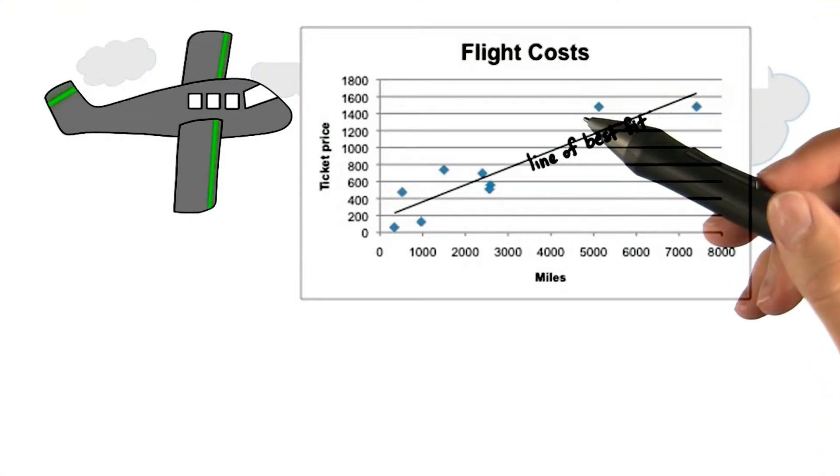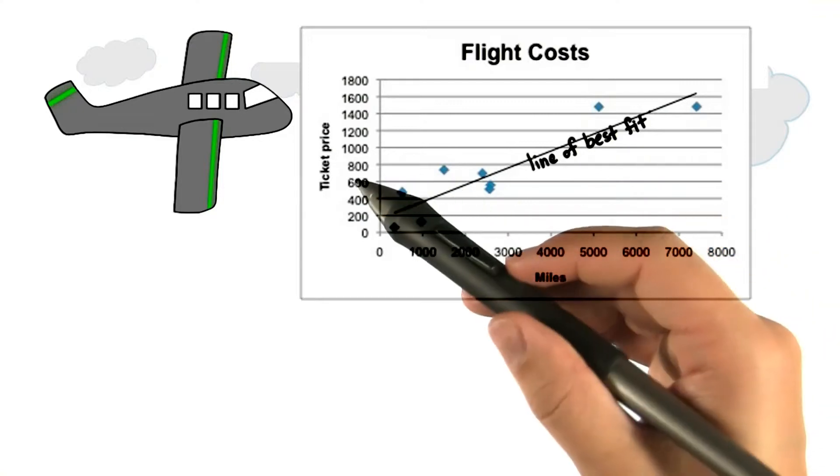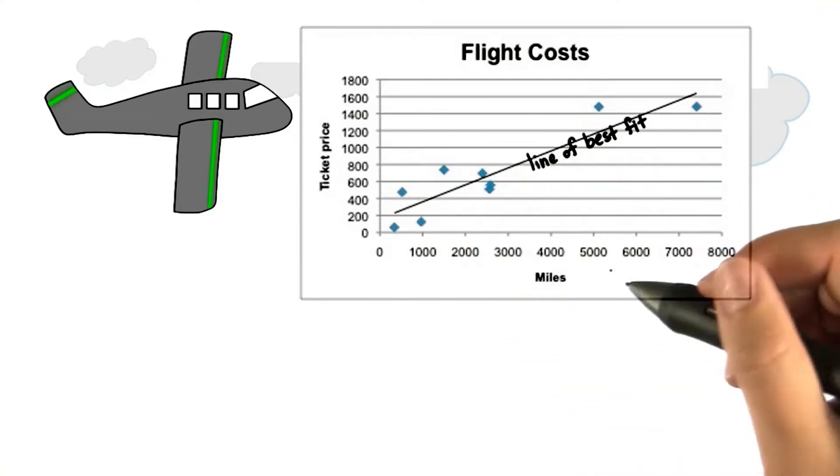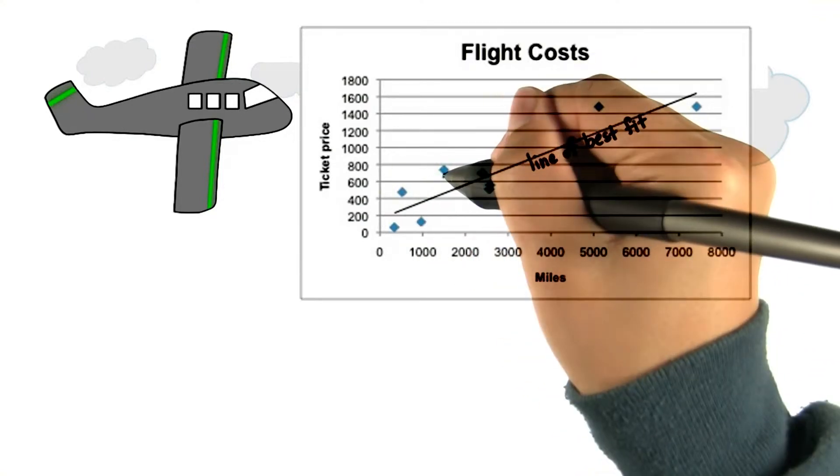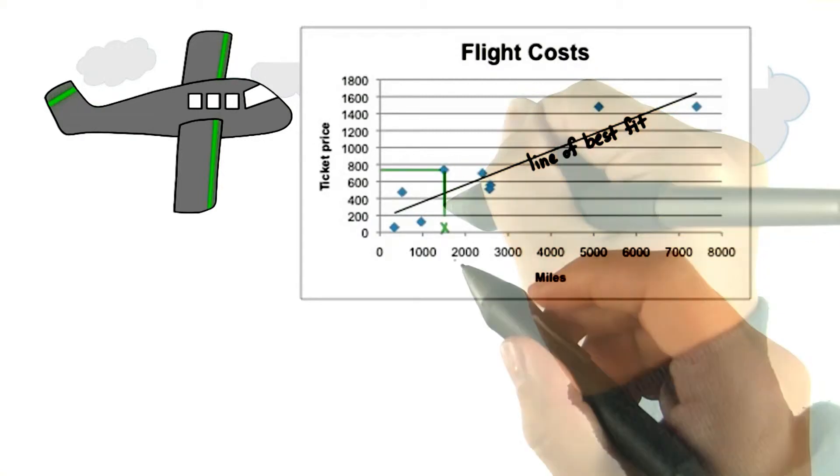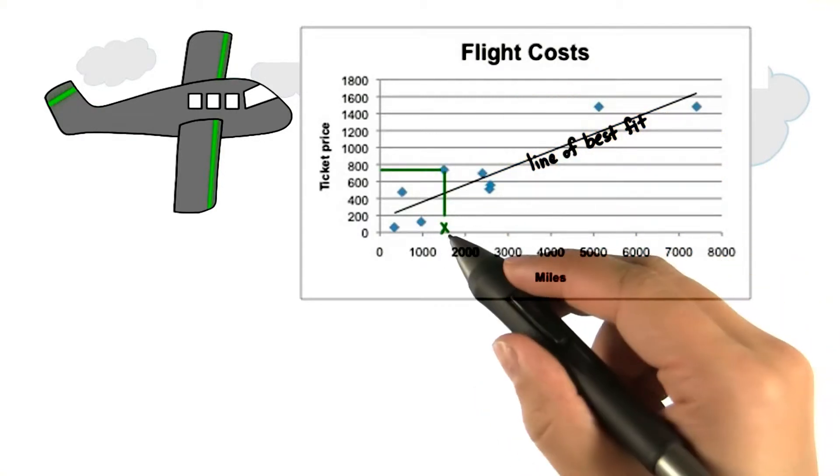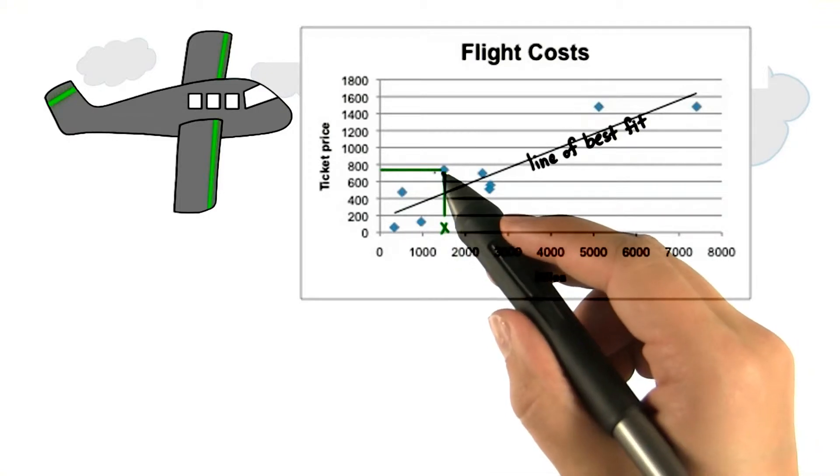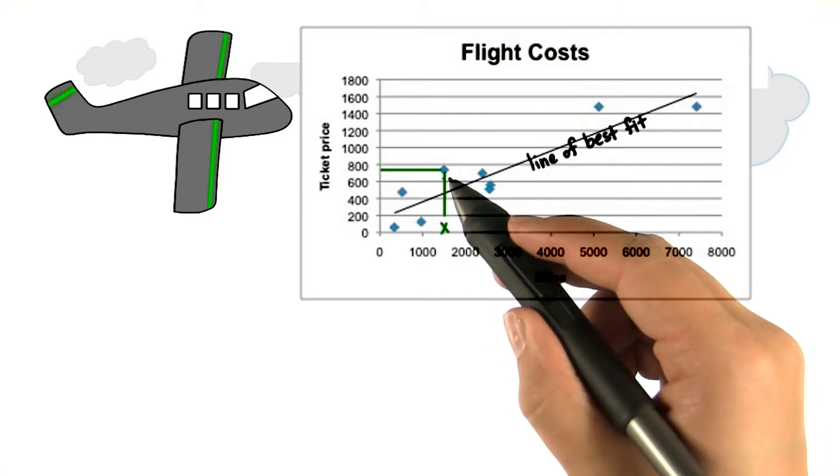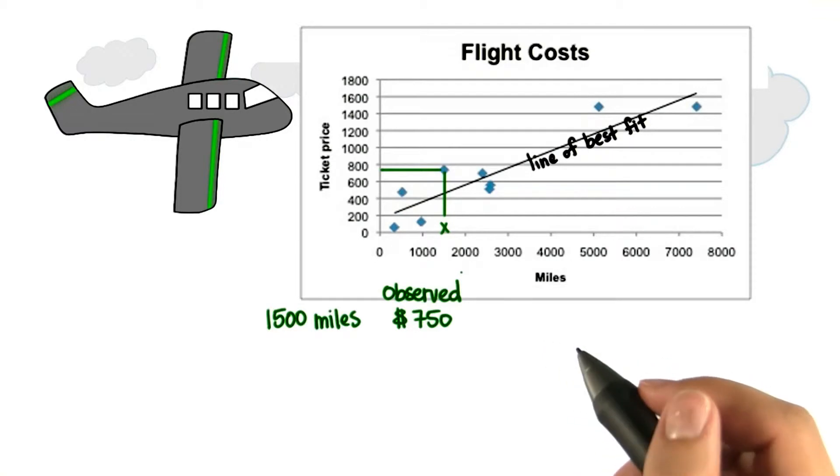This shows the expected value of the dependent variable y for any value of the independent variable. Let's focus on this point for example. For this x value, which looks like it's about 1,500 miles, we see that the flight costs almost $800. Let's say this is about $750. This is the observed value.